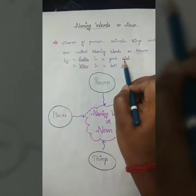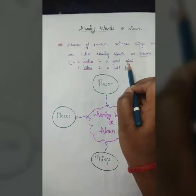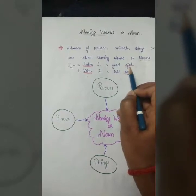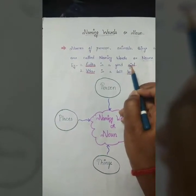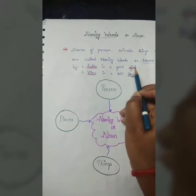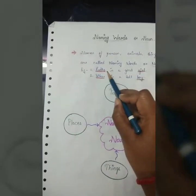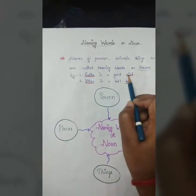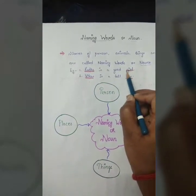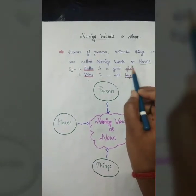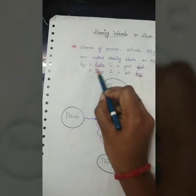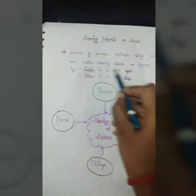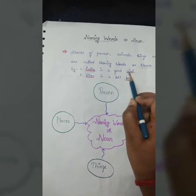Like, Radha is a good girl. So, Radha, here Radha is the name of a girl. So Radha and girl is noun here, naming word here.